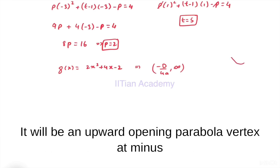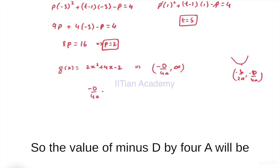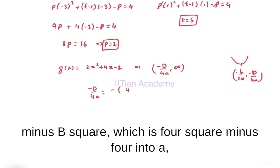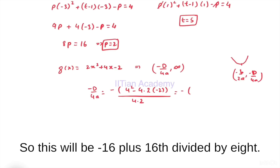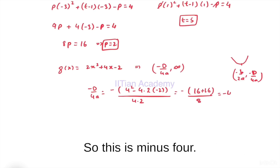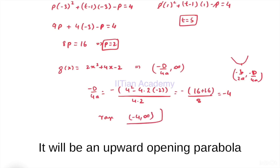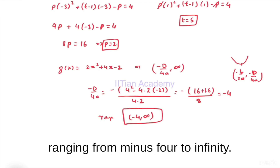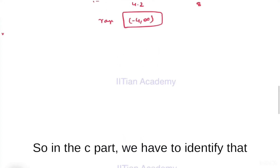The minimum value of g(x) is given by -d/4a = -(b² - 4ac) / 4a = -(16 - 4(2)(-2)) / 8 = -(16 + 16) / 8. Wait — this simplifies to -4. So the range of g(x) is [-4, ∞).